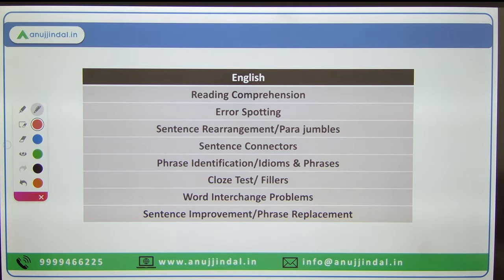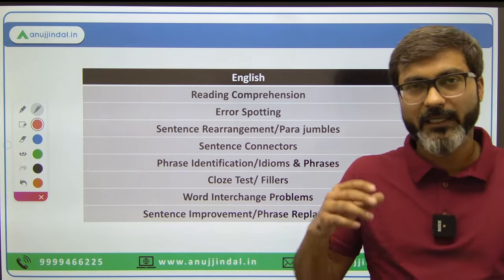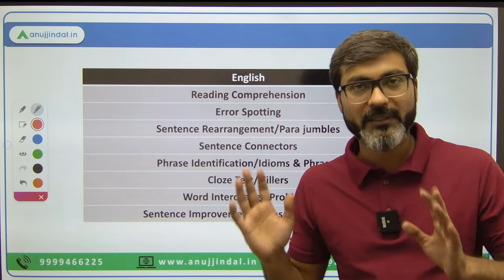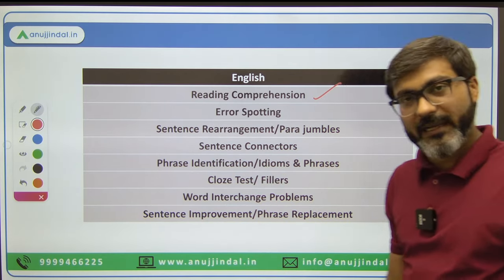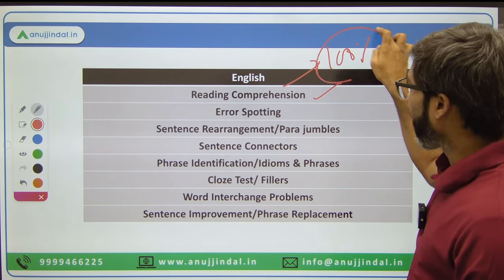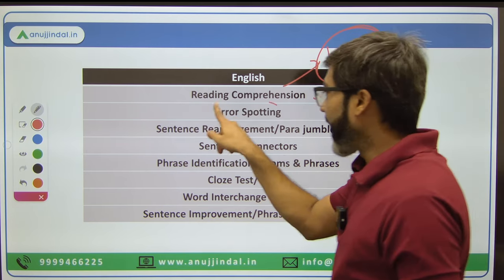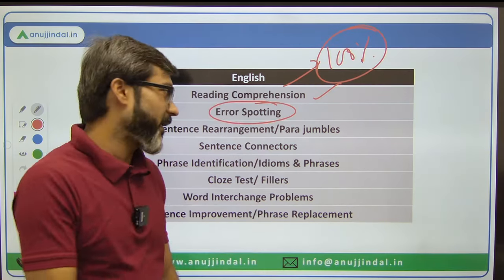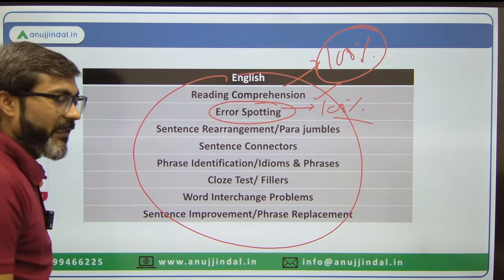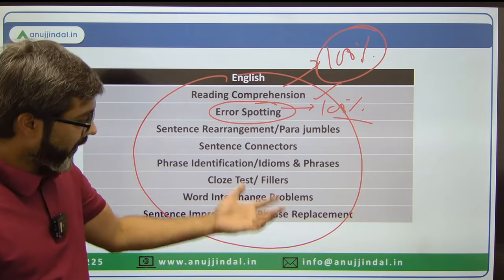Now let's talk about English — it is not too difficult. Topics in English: Reading Comprehension is 100% confirmed every year. Error Spotting is also almost 100% confirmed every year. In fact almost all the English topics appear every year — one topic might be skipped in a particular year but generally all of them are asked.